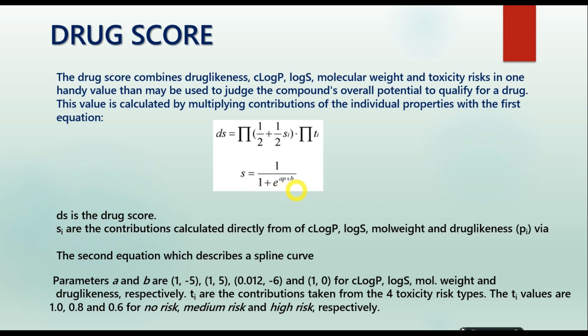Where a and b are the parameters for log P, log S, molecular weight, and drug likeness, whose values are as follows. The TI in the first equation contributes to four toxicity risk types, which include chemical, biological, physical, and radiation.